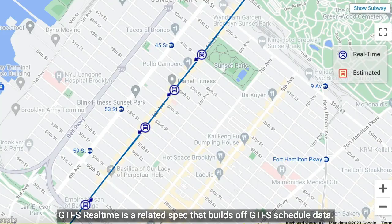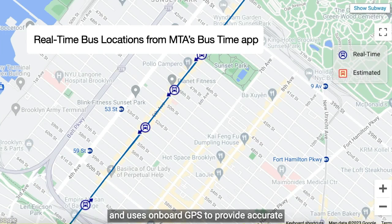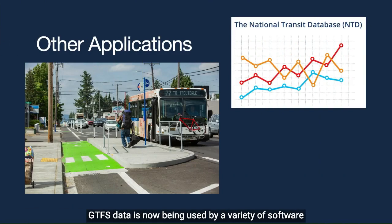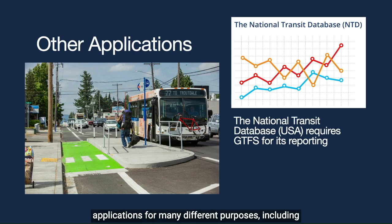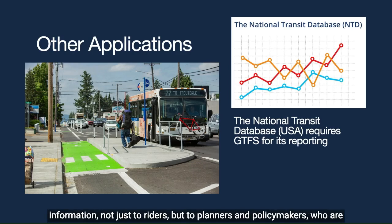GTFS real-time is a related spec that builds off GTFS schedule data and uses onboard GPS to provide accurate vehicle positions and predicted stop times. GTFS data is now being used by a variety of software applications for many different purposes, including data visualization and analysis tools for planning. Having up-to-date and high-quality data provides accurate transit information not just to riders, but to planners and policymakers who are able to better understand how transit is being used in their communities.